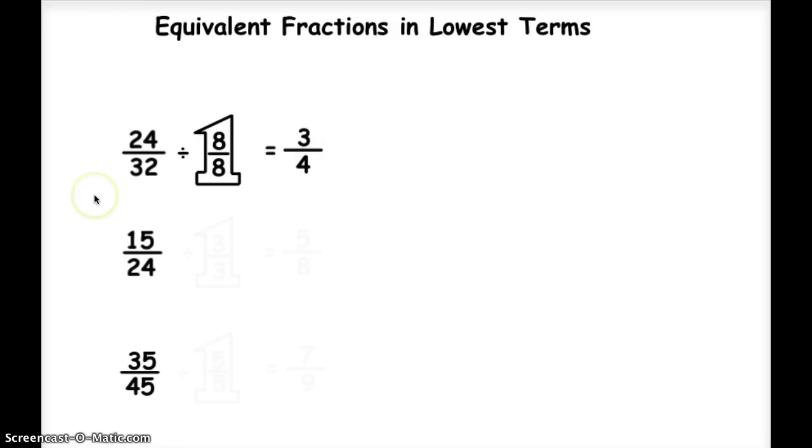Let's look at the next problem. 15 divided by 24, or 15 twenty-fourths. Now if I look at this, 15 is not divisible by 2 because it's not even. So I know 2 isn't a factor of both of those.